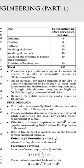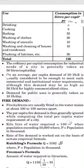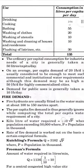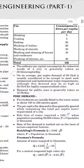The ordinary per capita consumption for industrial needs of a city is generally taken as 50 LPCD. On average, a per capita demand of 20 liters per head per day is usually considered enough to meet commercial and institutional water requirements, although this may be as high as 50 LPCD for highly commercialized cities. The demand for public uses is generally taken as 10 LPCD per day.